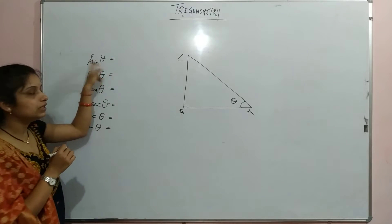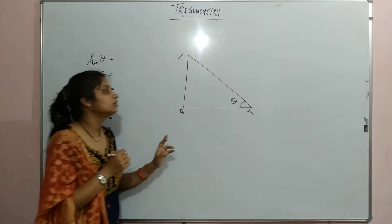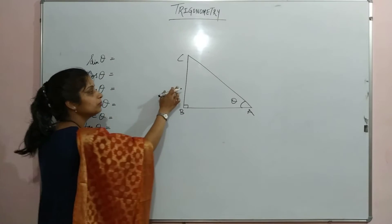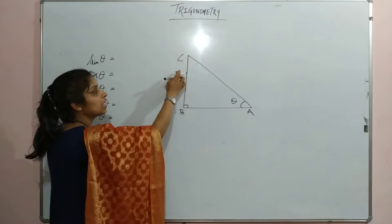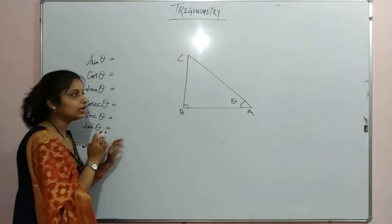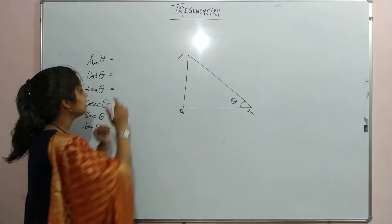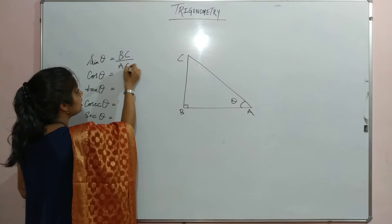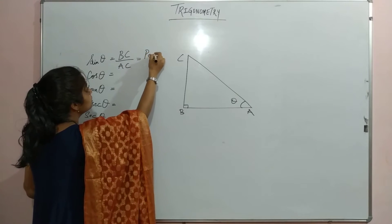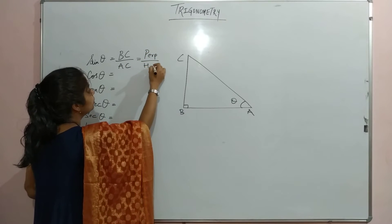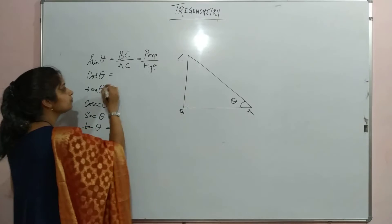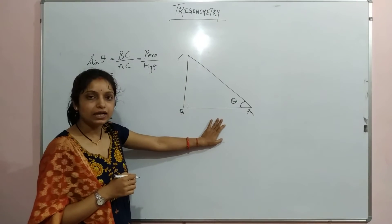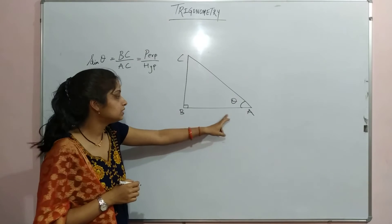You should know that sine theta equals perpendicular upon hypotenuse. The perpendicular is the side opposite to the angle, that means BC. So sine theta equals BC upon AC (hypotenuse). For cosine, it is the side adjacent to this angle, that means AB.